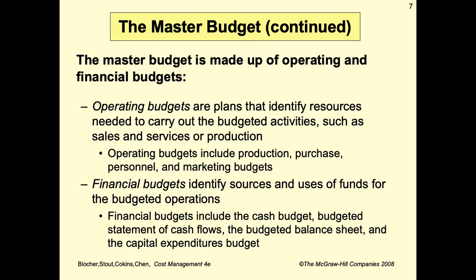Operating budgets are plans that identify resources needed to carry out budgeted activities such as sales, service, or production. Operating budgets include production, purchase, personnel, and marketing budgets. Financial budgets identify sources and uses of funds for the budget operation and include the cash budget, budgeted statement of cash flow, budgeted balance sheet, and capital expenditures budget.